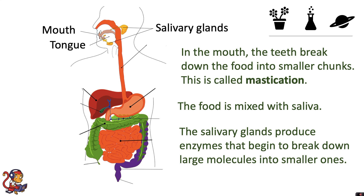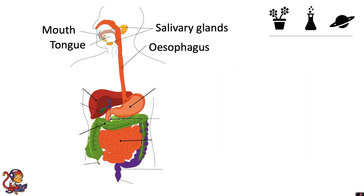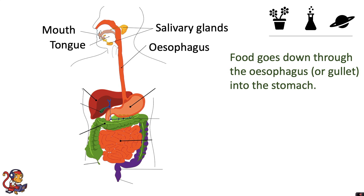The tongue will then help roll the food into a ball for it to be swallowed down into the next part of the digestive system, which is the esophagus. Food goes down through the esophagus, or sometimes called the gullet, into the stomach.